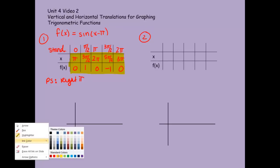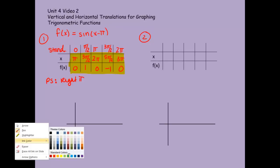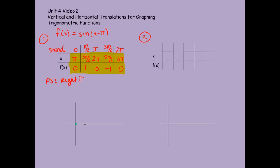Let's go ahead and put this on the graph. I'll mark out: 0, pi, 2 pi, and 3 pi. In between those marks I'll mark my 3 pi over 2 and my 5 pi over 2. So starting from pi, I go up to 1, back to 0, to negative 1, and back to 0. And there we have our shifted sine graph.